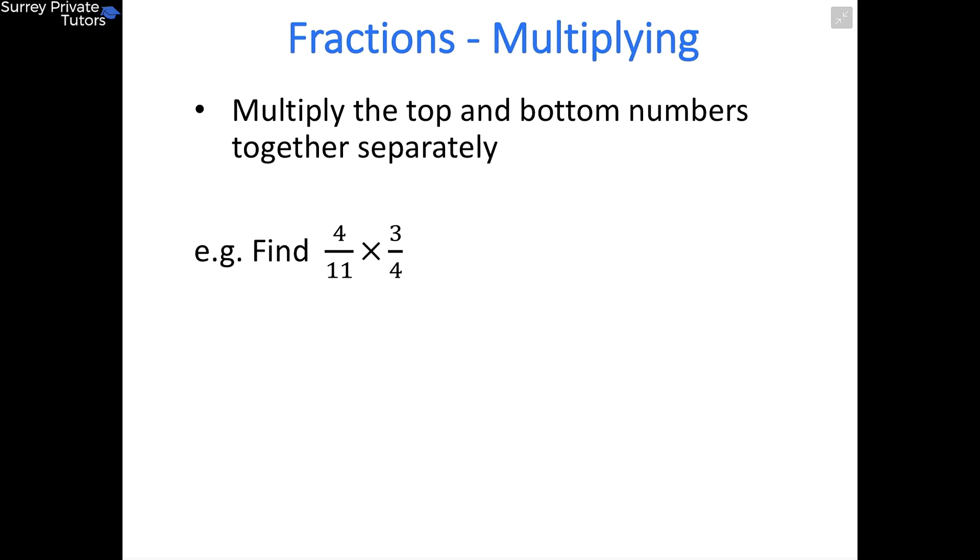Here we're going to look at multiplying fractions together, and the process for multiplying fractions is fairly straightforward. All you need to do is multiply the top two numbers together and then multiply the bottom two numbers together. If you do these separately, they'll give you your new numerator and your new denominator.